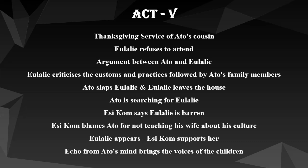At midnight, Ato is seriously looking for Eulalie but she cannot be found. The first and second women hear the noise from Esicom's house and come to find out. The second woman guesses that something is wrong between him and his wife. They talk about how Eulalie was seen in the evening sitting on the grass in the school compound with her head bowed. They go back to sleep. Esicom comes out to enquire what is happening. Ato tells her he is looking for Eulalie because she disappeared after he slapped her — he did so because she insulted his people and refused to go to the thanksgiving service.